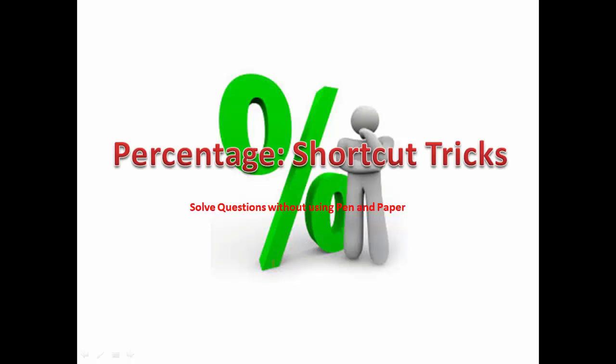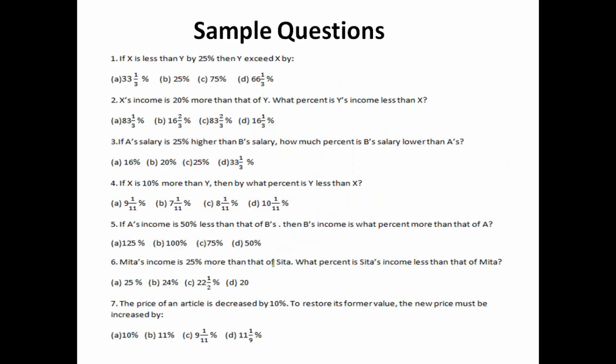Hello friends, welcome once again to the math shortcut tutorials by SSEexamTutor.com. Percentage is one of the most important topics for all competitive exams. In SSE exams, eight different types of questions based on percentage are asked, such as questions based on discount/dealer, income/expenditure, election of candidates, reduction in price enabling a customer, etc. In this tutorial I will be dealing with one of these kinds and will share shortcuts for other parts in future tutorials. Let's have a look at some sample questions — these are typically tier-one questions.